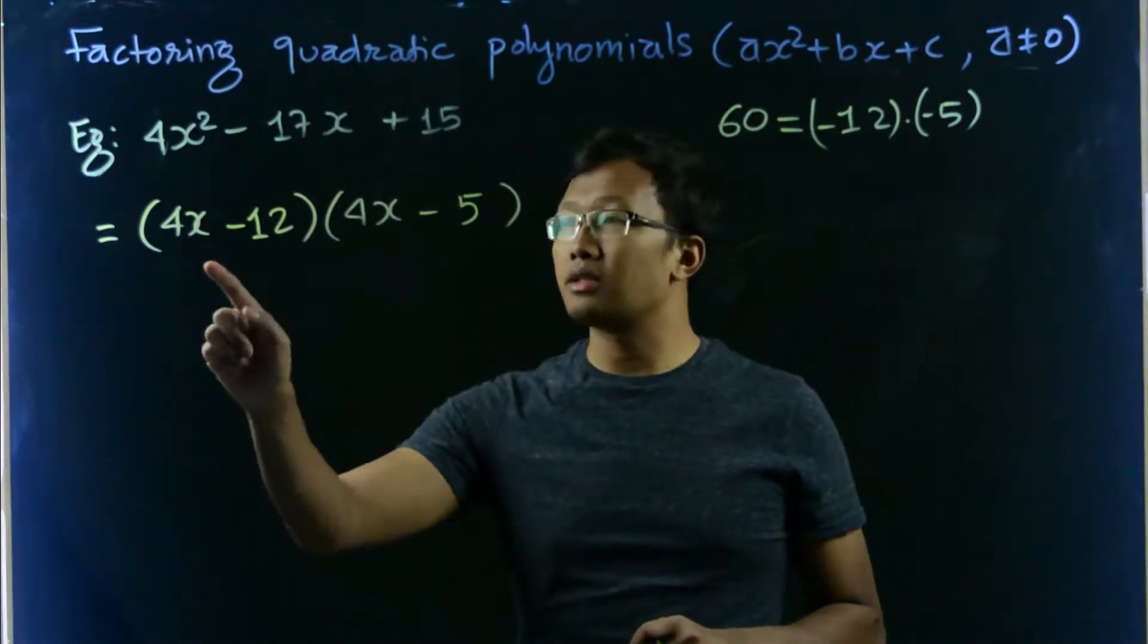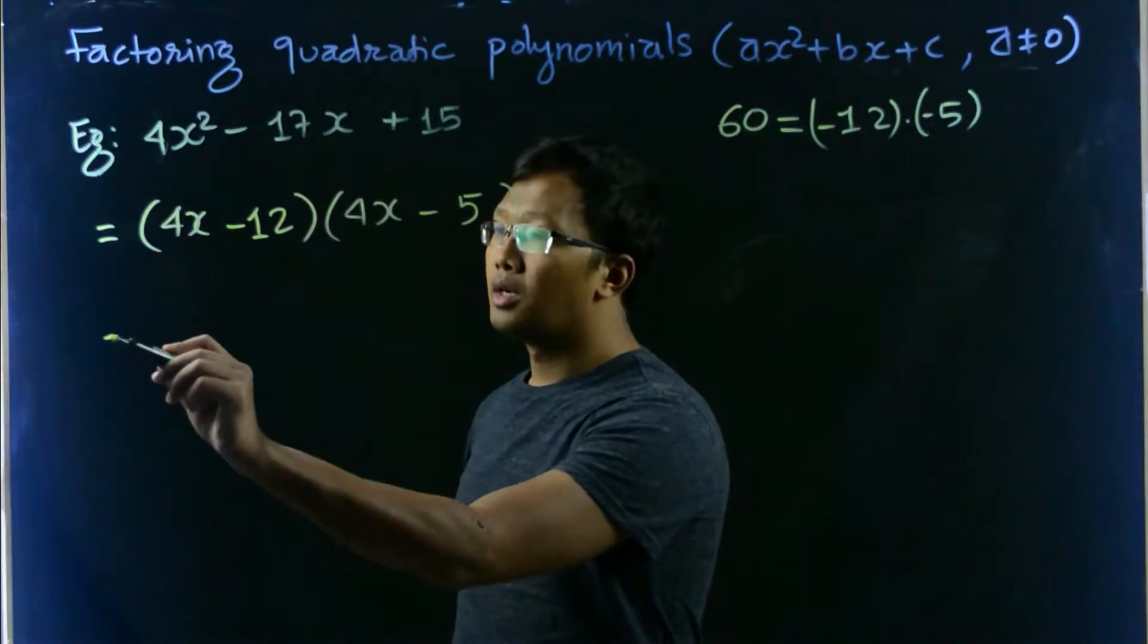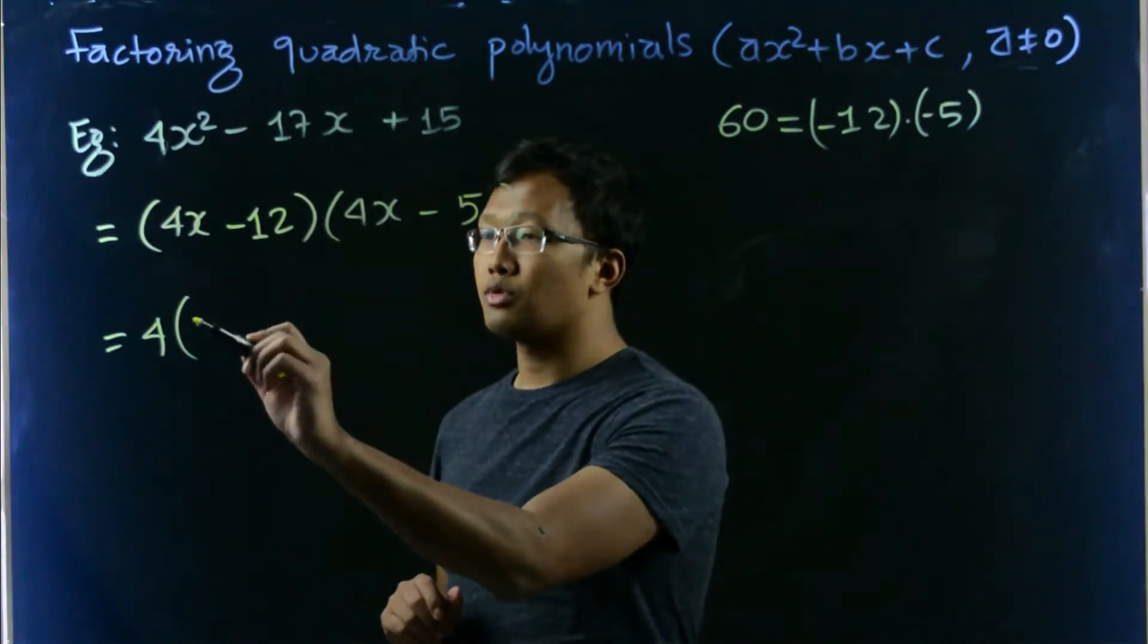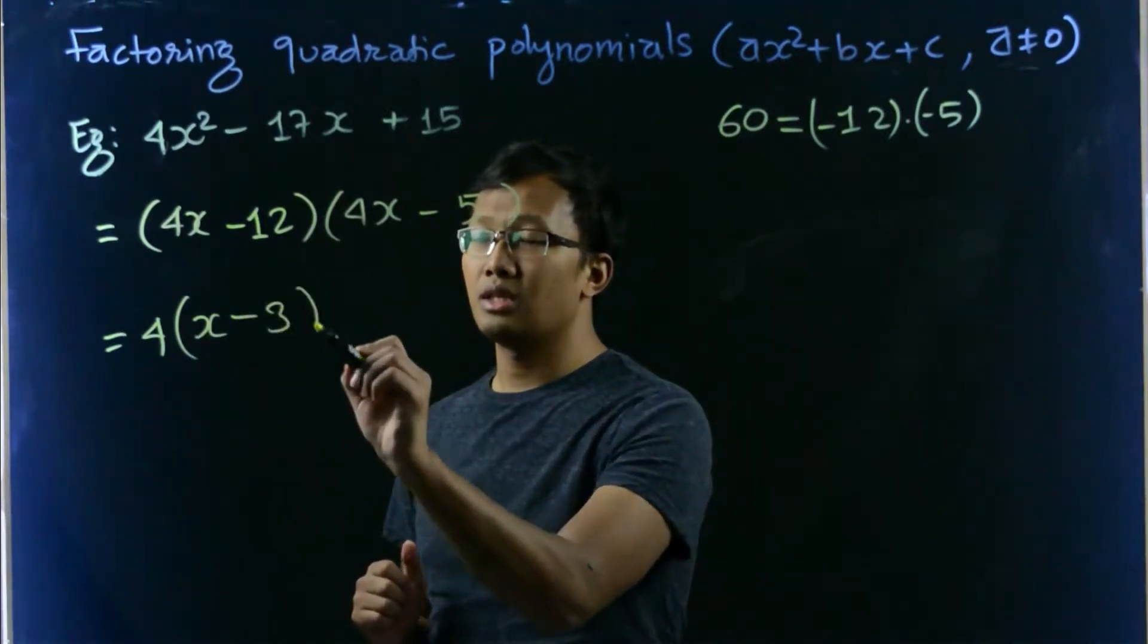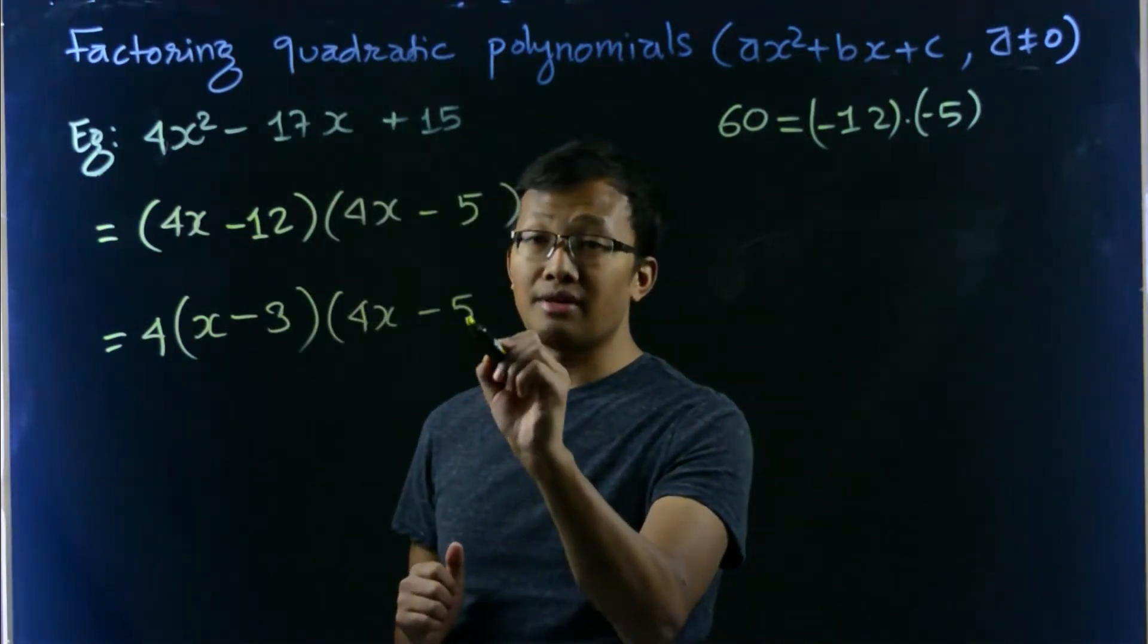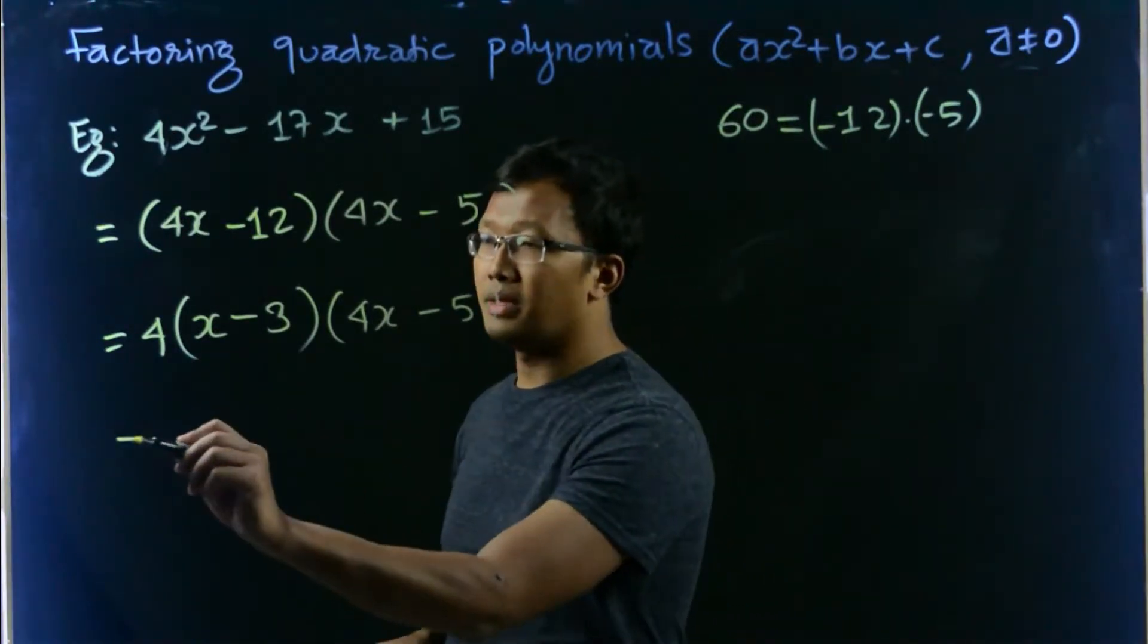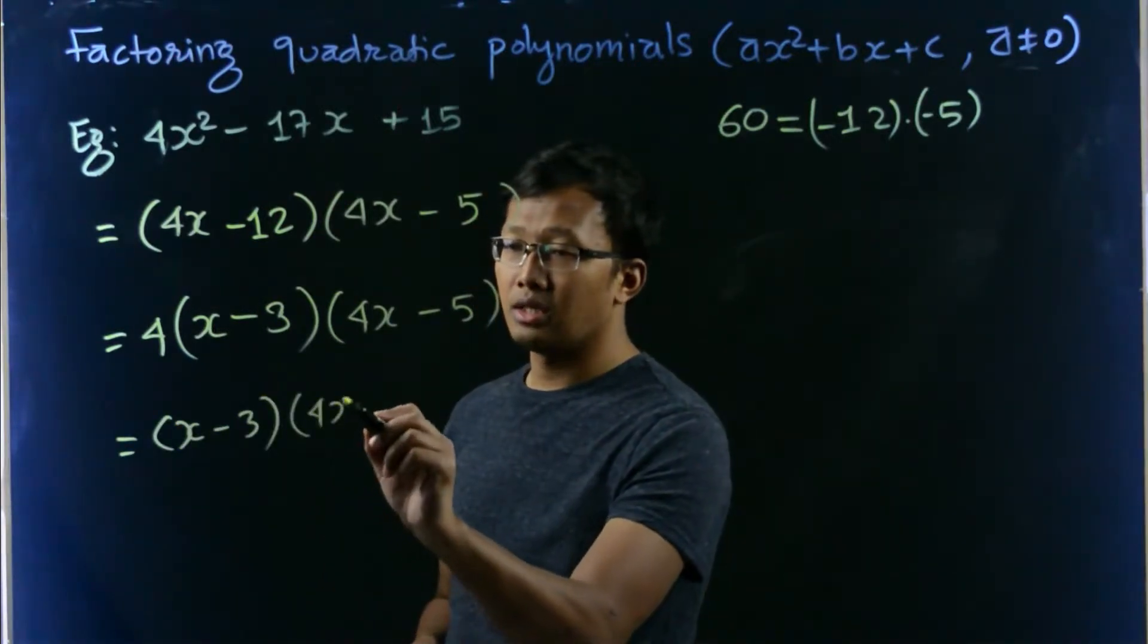Here you can see in the first factor, 4 is common between 4x and 12. So let's factor that out. If we write down 4 outside of the parenthesis, then we'll be getting 4 times x is 4x minus 4 times 3 is 12. Similarly, 4x minus 5, they don't have anything in common.